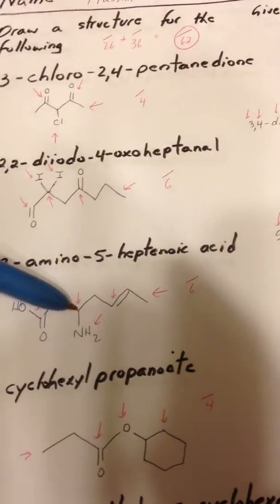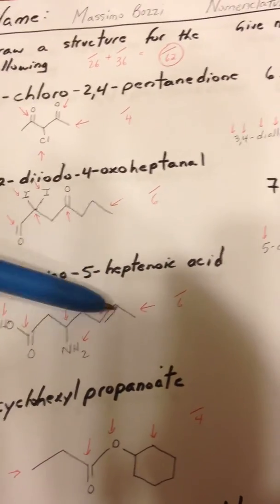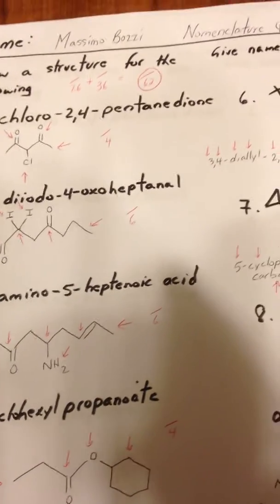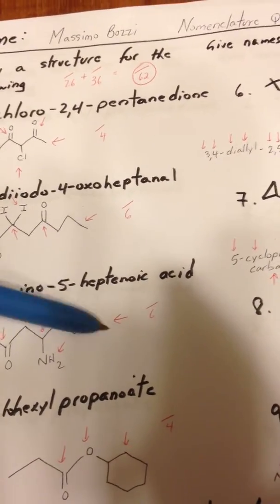The third molecule has an amino group at the third position. It's named as an acid, and there's a double bond in it at the fifth position, so we call it 3-amino-5-heptenoic acid.